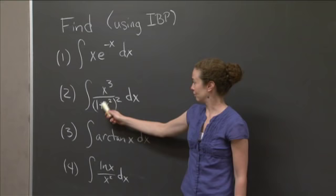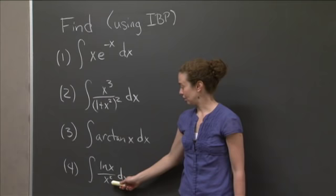The problems are: x e to the minus x, x cubed over the quantity 1 plus x squared squared, arctan x, and natural log x over x squared.